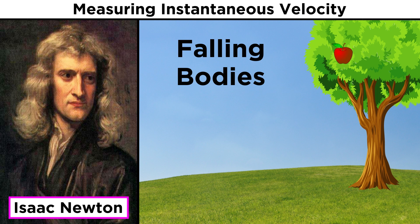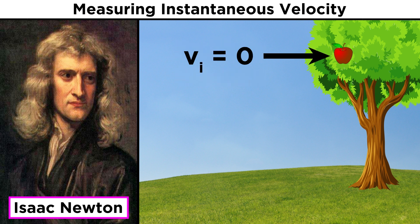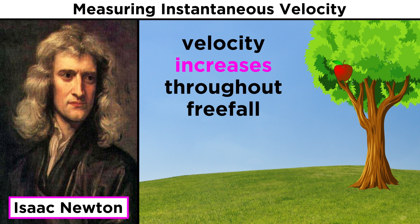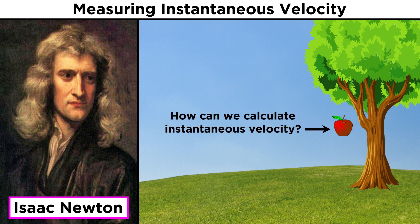When we introduced calculus, we talked about how Newton pondered a falling body, perhaps like his mythical apple. He knew that if an object was dropped some short distance from rest, meaning with an initial velocity of zero, that velocity would necessarily increase in the negative direction every single instant until hitting the ground. He then wondered how one could calculate the velocity of the apple at any particular instant during the fall. This is called the instantaneous velocity.